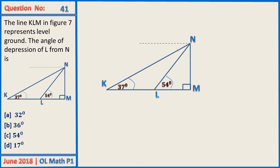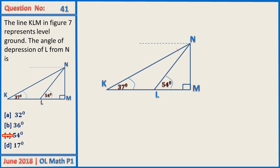If you look carefully, you can see that this angle is the same as 54 degrees. So the angle of depression of L from N is equal to 54 degrees. The answer here is 54 degrees.